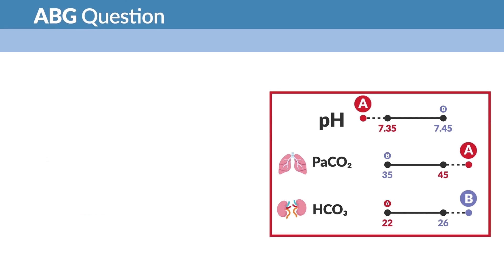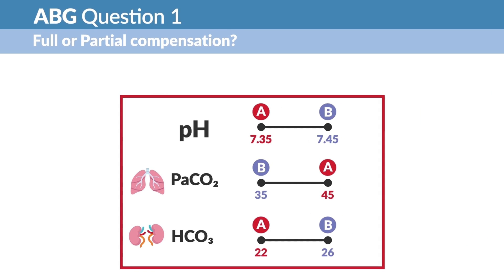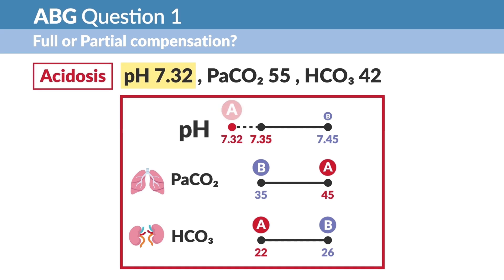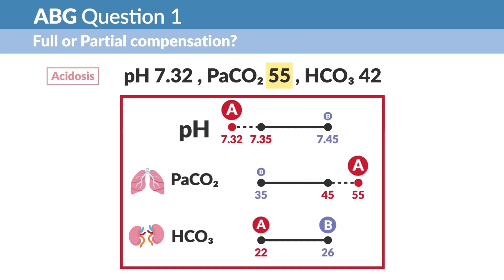Let's do an example question to see this in action. ABG question one: full or partial compensation? Looking at our numbers here, pH is 7.32, CO2 at 55, and HCO3 at 42. We fill out our marching band suit like normal. Step one: the pH is acidic at 7.32. Step two, we find the match: CO2 is a little bit high and in the acid range, so it's respiratory acidosis.